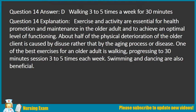Explanation: Exercise and activity are essential for health promotion in the older adult. About half of the physical deterioration of the older client is caused by disuse rather than by the aging process or disease. One of the best exercises for an older adult is walking, progressing to 30-minute sessions three to five times each week. Swimming and dancing are also beneficial.